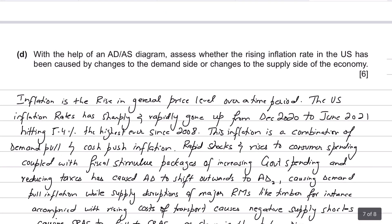Part D says: with the help of an AD-AS diagram, assess whether the rising inflation rate in the US has been caused by changes to the demand side or changes to the supply side of the economy. So they're asking whether inflation has been caused by a fall in AS or a rise in AD — whether it's demand-pull or cost-push inflation. The word 'assess' involves evaluation, and we also need to form a judgment: is it demand-side, supply-side, or possibly both?